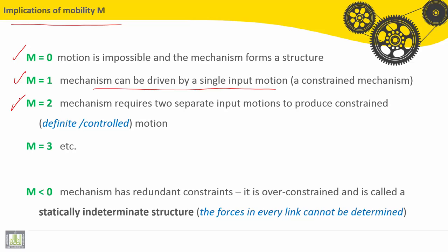If M equals two, the mechanism requires two separate input motions to produce constrained, that means defined or controlled motion, and so on.